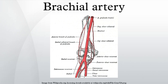Branches of the brachial artery include the profunda brachial artery, superior ulnar collateral artery, inferior ulnar collateral artery, radial artery, ulnar artery, nutrient branches to the humerus, as well as important anastomotic networks of the elbow and the shoulder.